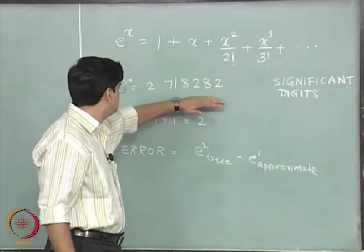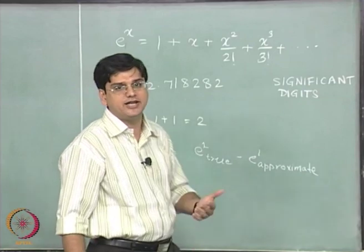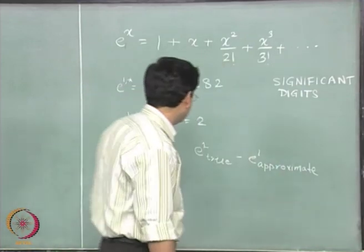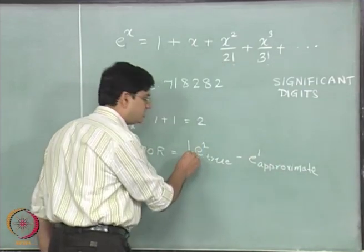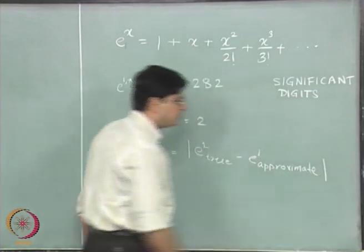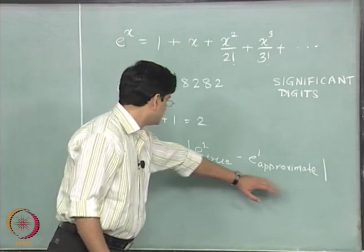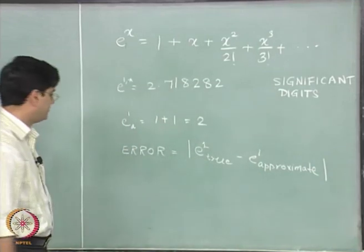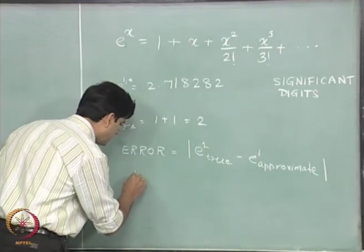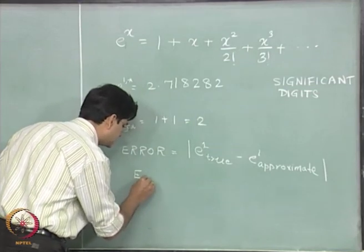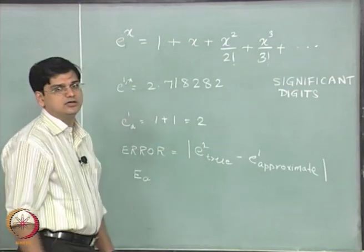The error is actually going to be defined as the absolute value of the difference between the two. This is known as the absolute error and we will represent it as Ea, the absolute error.